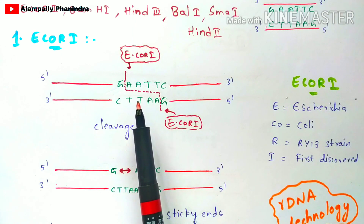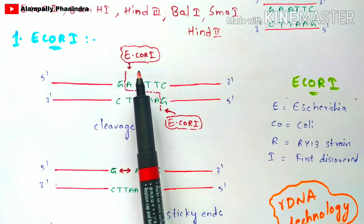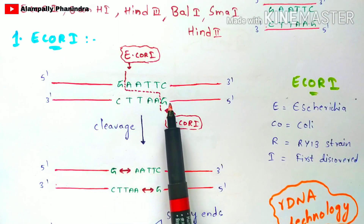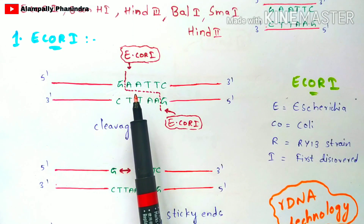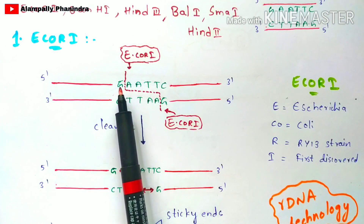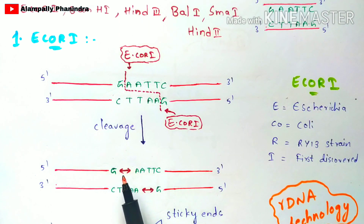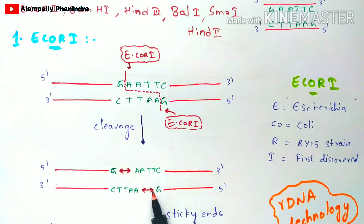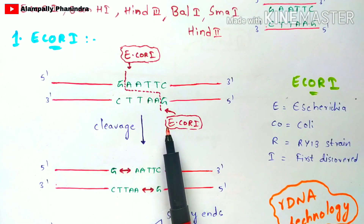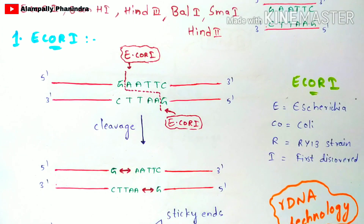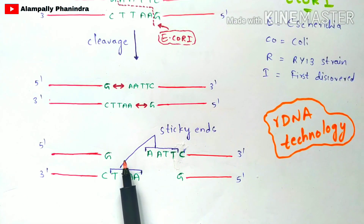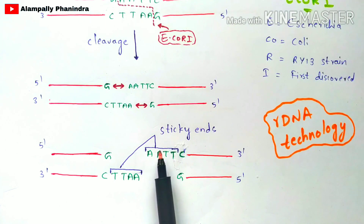Once there is a restriction site, the restriction endonuclease enzyme can perform its function. EcoRI performs its function on this restriction site where it produces sticky ends — this is very important to remember. EcoRI starts cleaving between the G nucleotide and the A nucleotide (guanine and adenosine). Another EcoRI enzyme performs cleavage on the second strand, again between A and G. As the cleavage is done, a gap is created between guanine and adenine on both strands. The gap extends to produce sticky ends.